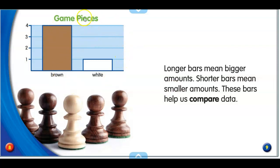Here's another bar graph. Title is Game Pieces. One, four, three, two, one. So there's four brown and one white. You can compare how big the brown bar is compared to the white.